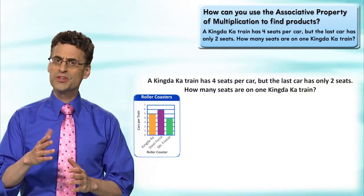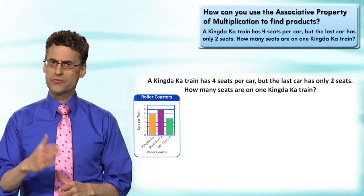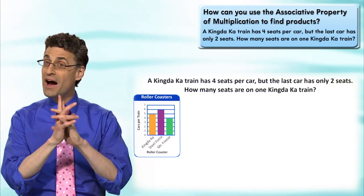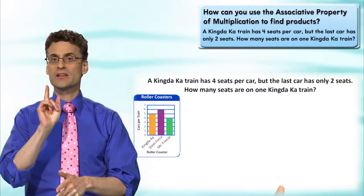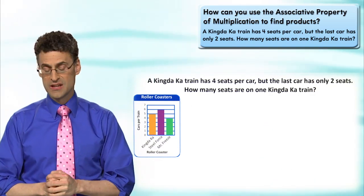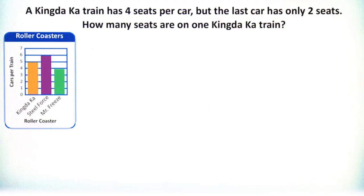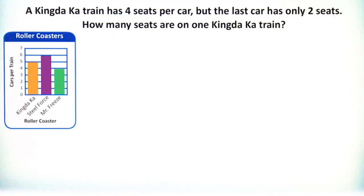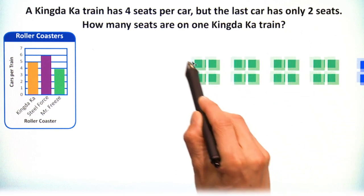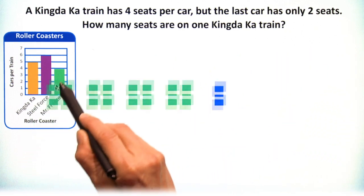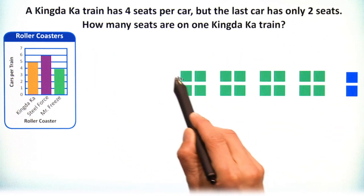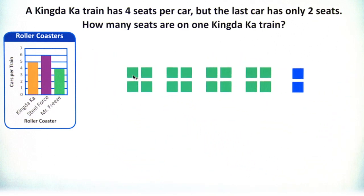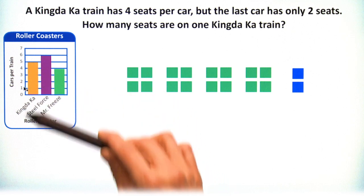We're told the train has four seats per car, but the last car has only two seats. So there are five cars, but the fifth one has only two seats and the other four have four seats each. Let me show it to you - I'll bring it on like a roller coaster. Here it comes!